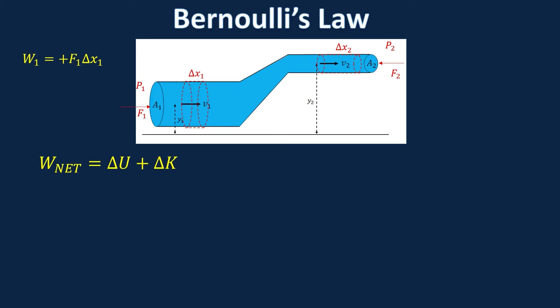The work done on the left at point one is F1 delta X, which is positive because on the left the force is going into the system — water flows left to right, so the outside force is a positive force. Since pressure is force over area, force equals pressure times area, and the work is pressure times area times delta X. Regrouping, area times length is the volume of the little cylinder, so the total work done on the left is P1 times V.